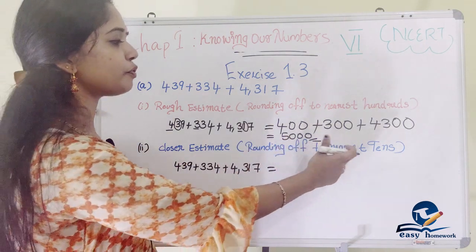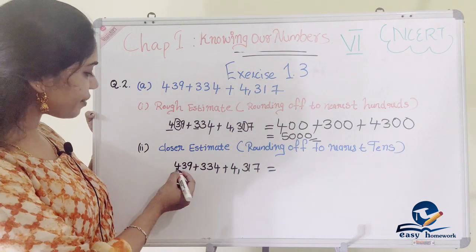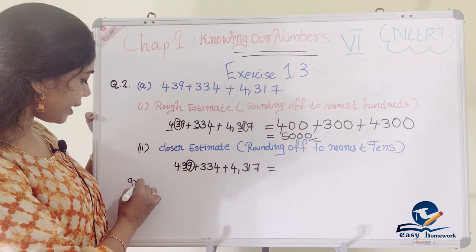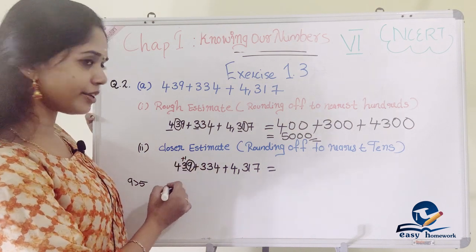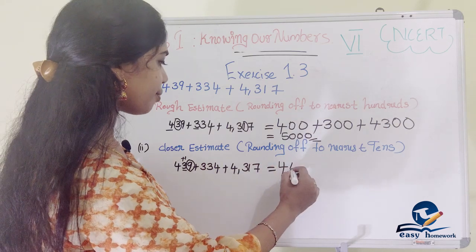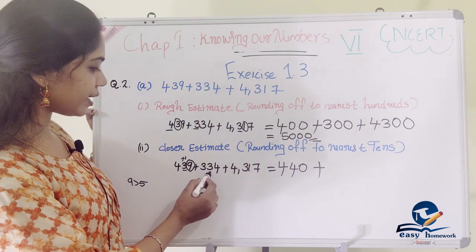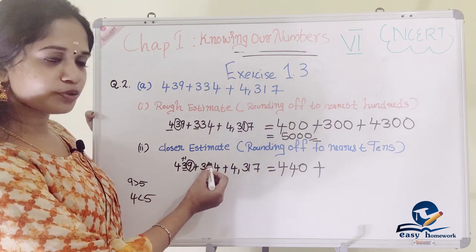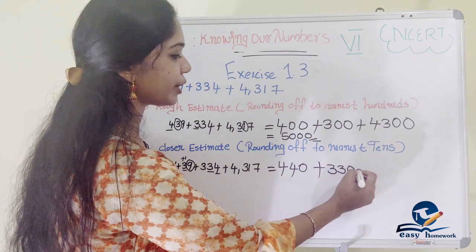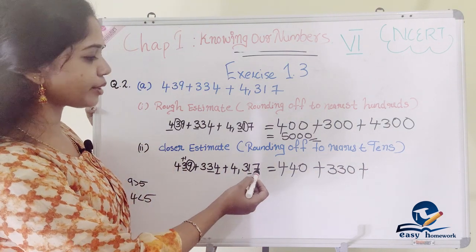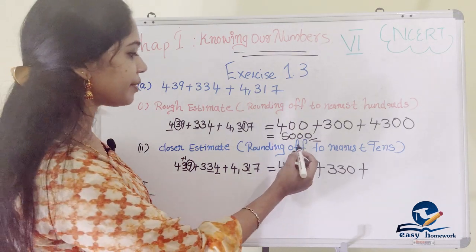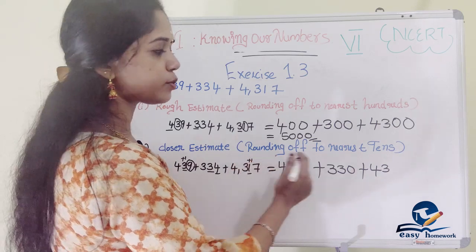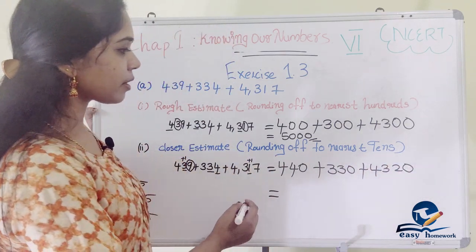Next, closer estimate — rounding off to the nearest 10s. For 439, the digit in the tens position is 3, and in the unit place is 9. Since 9 is greater than 5, we add 1 to the tens digit. So 439 rounds to 440. For 4,317, the unit place is 7, which is greater than 5, so we add 1. The closer estimate answer is also approximately 5,000.